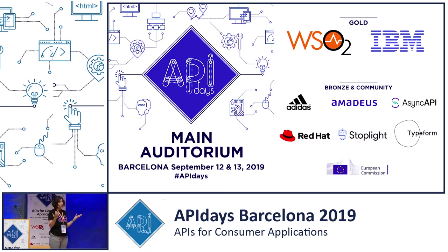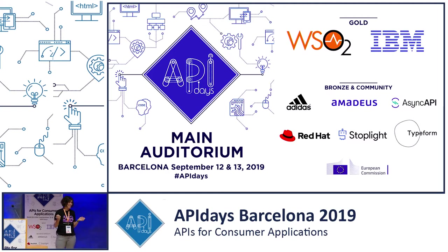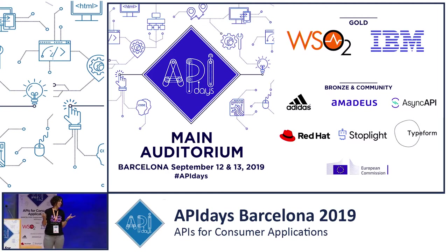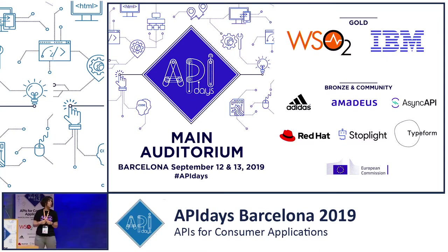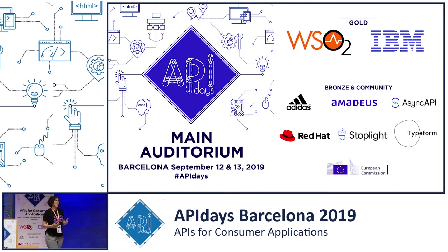Do you know what the biggest website on the dark web is? Facebook. Facebook has an onion service, so users in Iran, users in China, users around the world can access Facebook using Tor. There are plenty of legitimate use cases, but they're not as interesting as saying someone is selling drugs online.